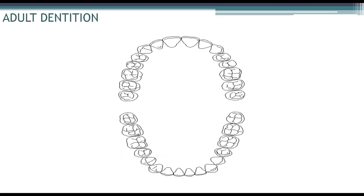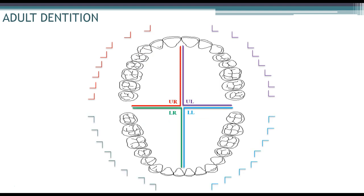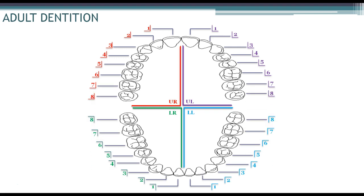Now let's look at adult dentition. Adults have 32 teeth, so we go from the central incisor — which is 1 — all the way to the last tooth, which is the third molar or wisdom tooth at number 8. We're going to color-coordinate this: upper right, upper left, lower left, and lower right — each tooth related to its quadrant symbol. The central incisors are 1, lateral incisors 2, canines 3, first premolars 4, second premolars 5, first molar 6, second molar 7, and third molars 8.